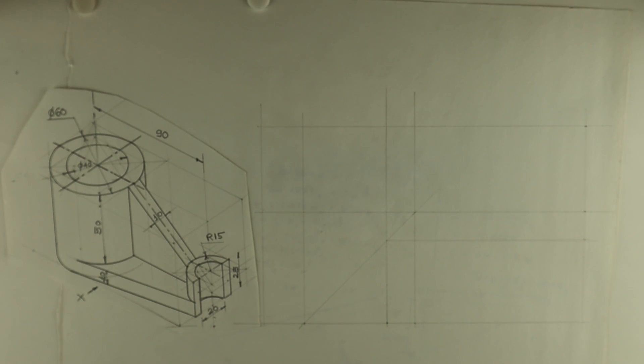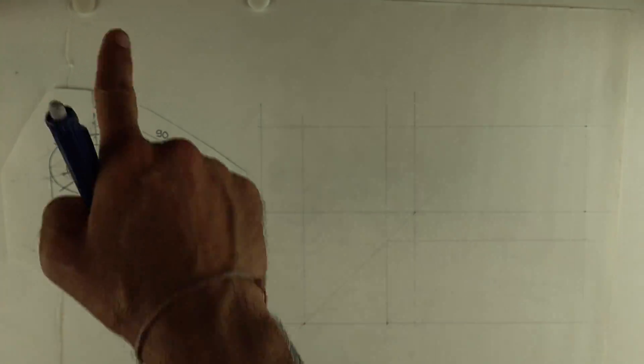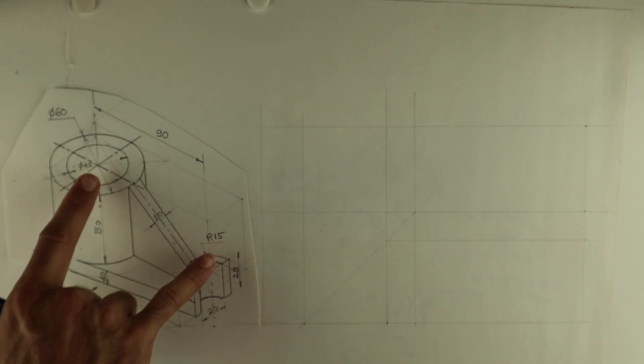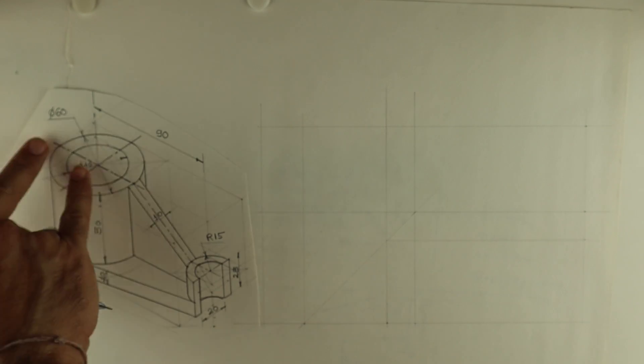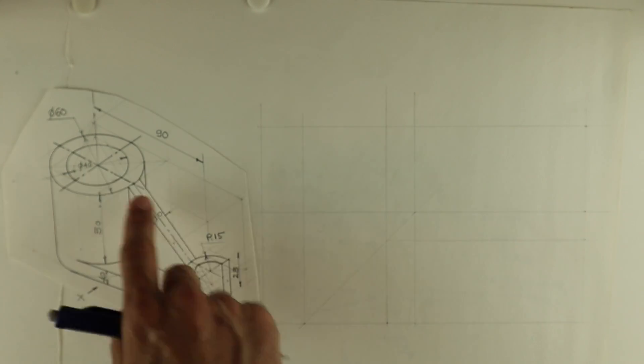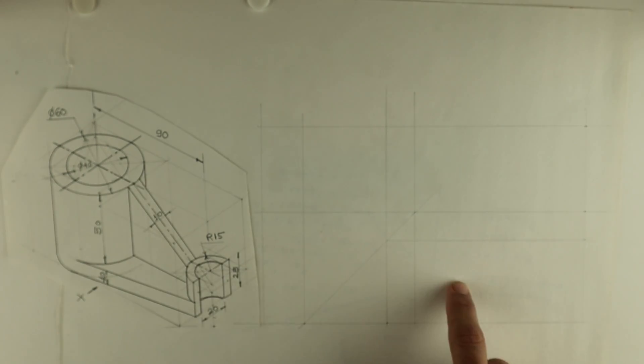Welcome to technical drawing. Today we are going to draw this part in orthographic projection - front view from here, top view, and side view from here. The length is 90 plus 30, that's 120. Height is 50 plus 10, that's 60, and width is 60.